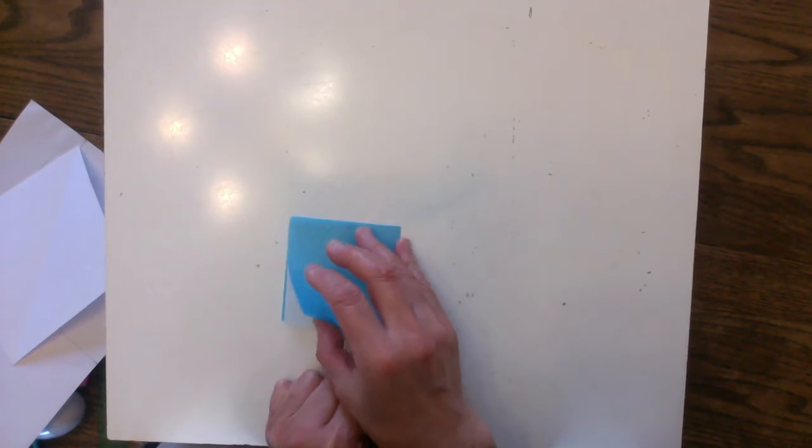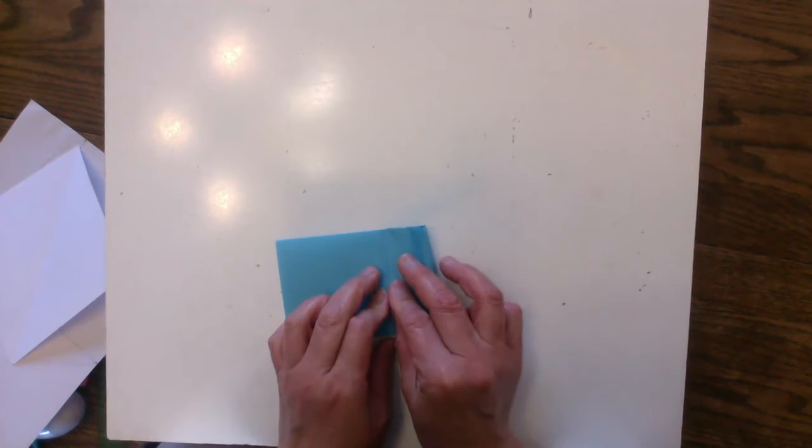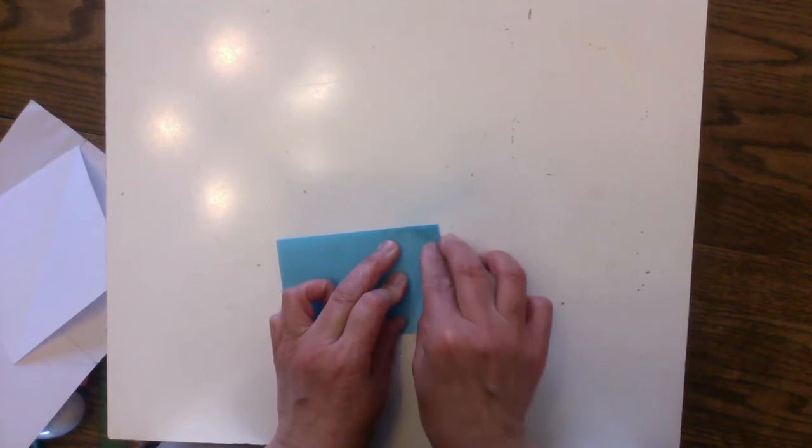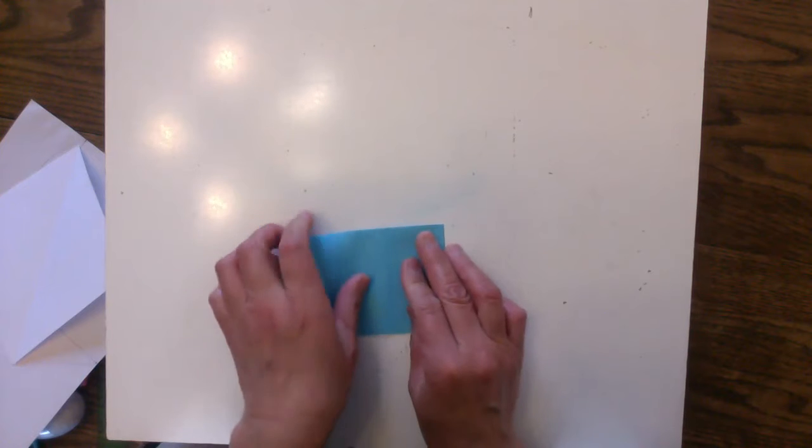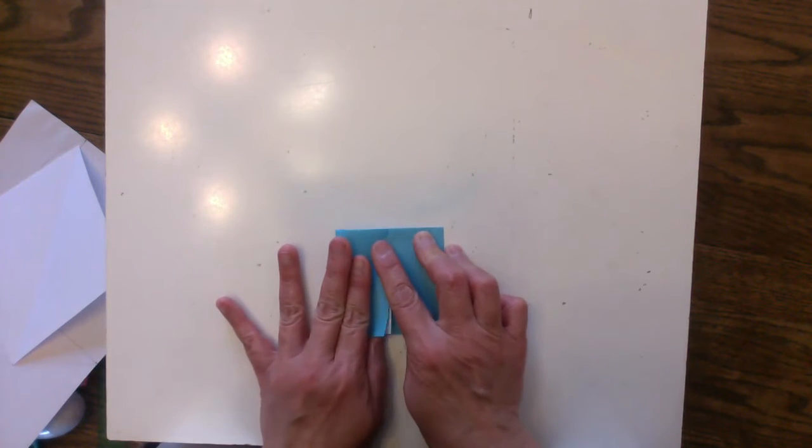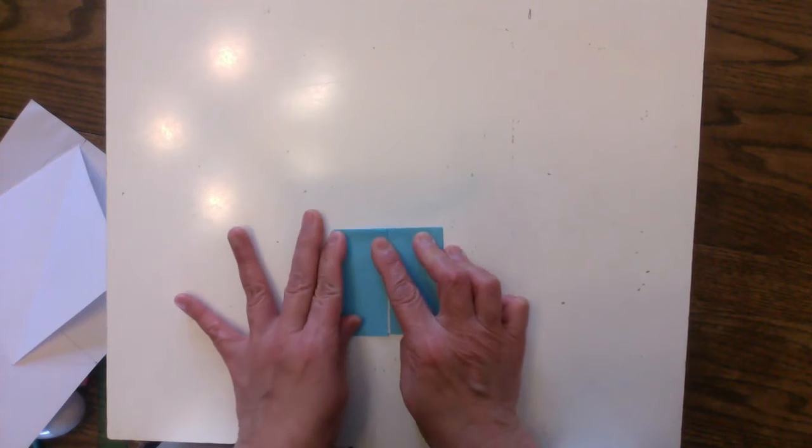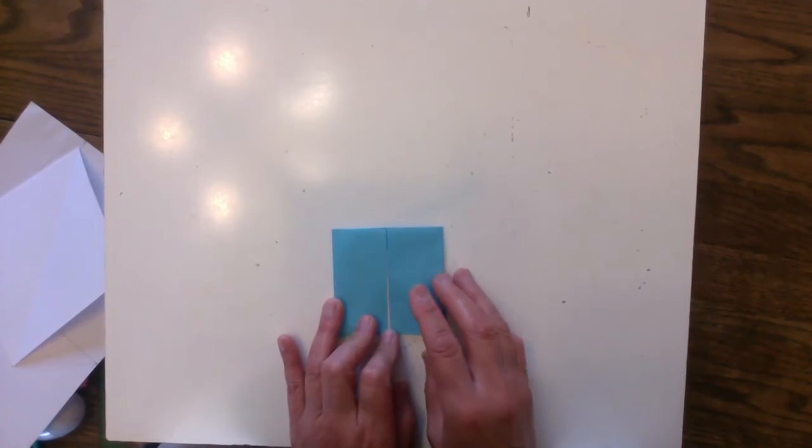Now open it up and then bring the right edge to the center. Now you might start remembering this. You have done this before when you made a paper wallet. It starts out exactly the same.